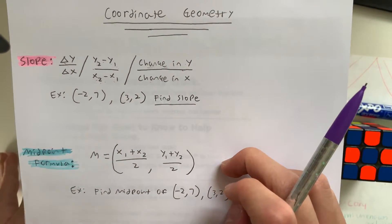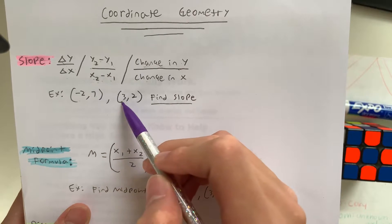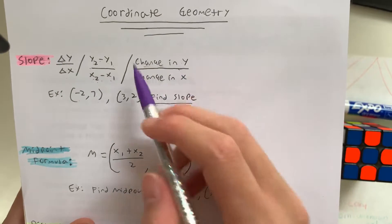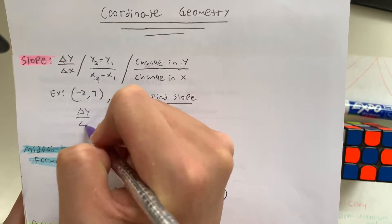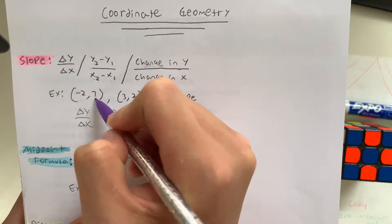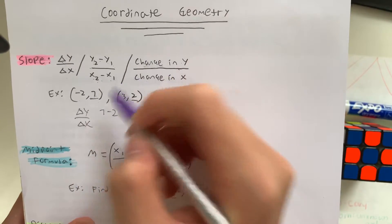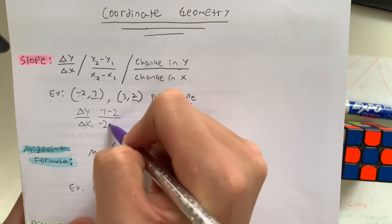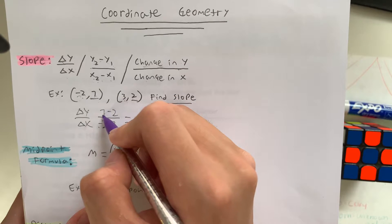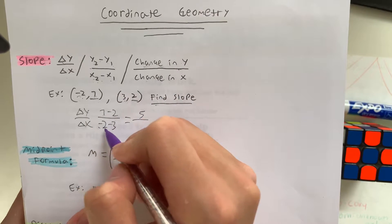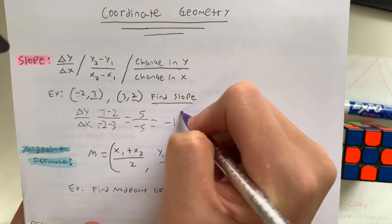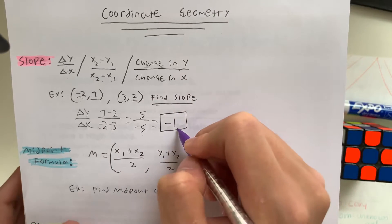So let's use this in an example. We have negative 2 and 7, and 3 and 2 as our two points, and they're asking us to find the slope. It's the change in y over the change in x. So what is 7 minus 2? Those are the y coordinates. And we have the x coordinates: negative 2 minus 3. Now 7 minus 2 equals 5, and negative 2 minus 3 is equal to negative 5. So what is 5 over negative 5? That's equal to negative 1, meaning our slope is equal to negative 1.